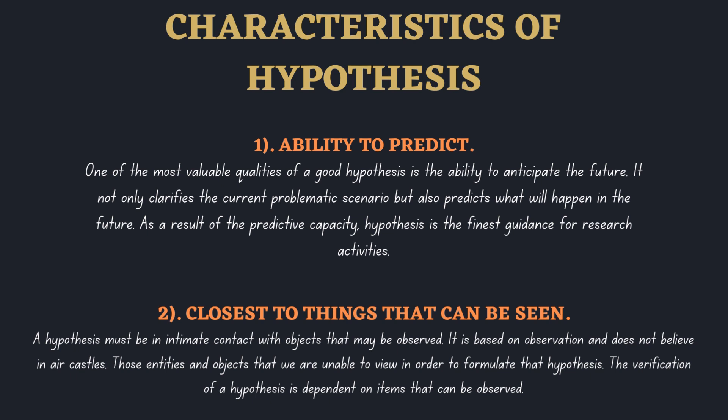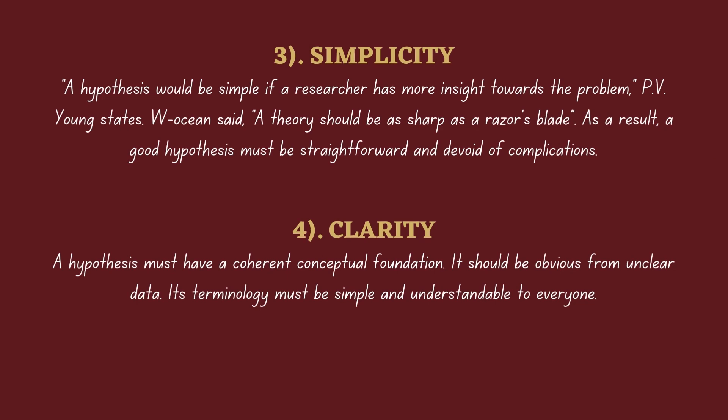Closest to things that can be seen: a hypothesis must be in intimate contact with objects that may be observed. It is based on observation and does not believe in air castles. Those entities and objects that we are unable to view cannot be used to formulate a hypothesis. The verification of a hypothesis is dependent on items that can be observed.